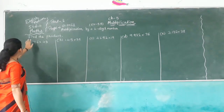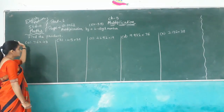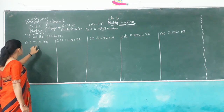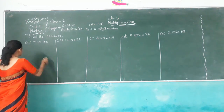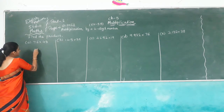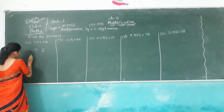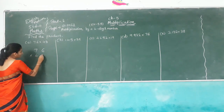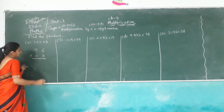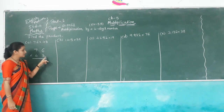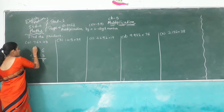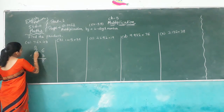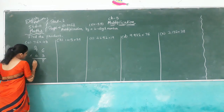Look here, all kids. Find the product. Here we have a 2-digit number multiplied by a 2-digit number. So, 76 multiplied by 43. Always first you count the ones place. 6 times 3 is 18, carry over 1. 7 times 3 is 21, plus 1 is 22.